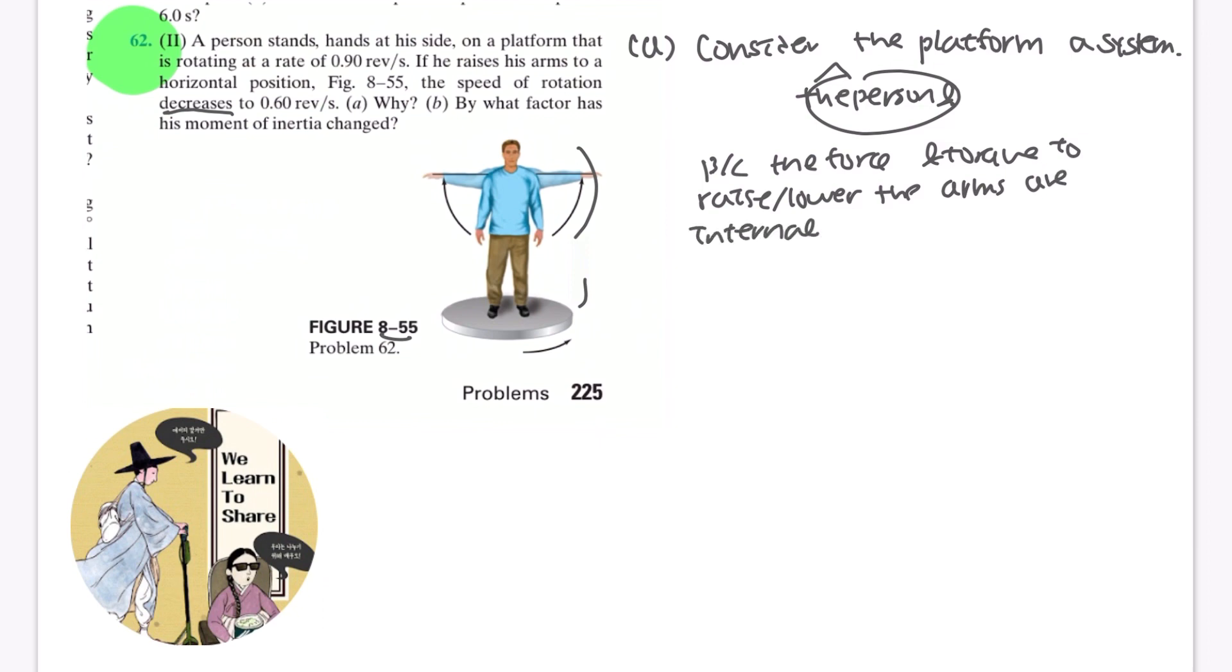Because we are considering this person and the platform as one system, and because the man raising or lowering the arms is caused by the person, which is a component of the system, the force and torque to do that arm movement would be internal to the system. Therefore, the raising or lowering of the arm will cause no change in the total angular momentum of the system.